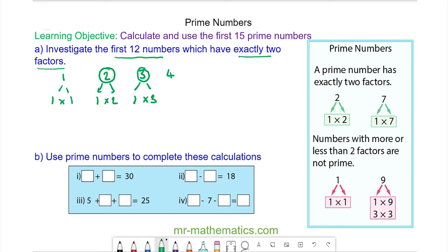The number four has one and four, and then two multiplied by itself. So because four has three factors, it is not prime.